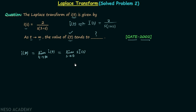Before calculating the final value using the final value theorem, we always check two conditions. The first condition says the signal should equal 0 for all values of t less than 0. Whenever the region of convergence is given we check this condition, but in this question ROC is not given, so we assume condition number 1 is satisfied.